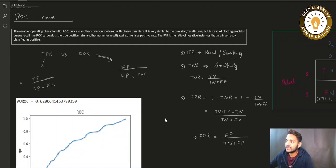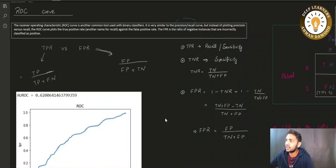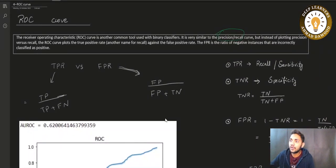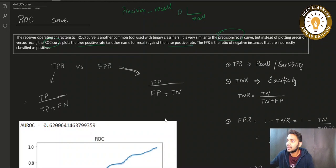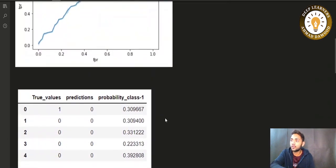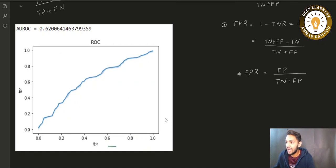It is very similar to the precision-recall curve, but instead of plotting precision vs. recall, the ROC curve plots true positive rate vs. false positive rate. In the last session, on the x-axis we had recall and on the y-axis we had precision. But in the ROC case, on the x-axis we have false positive rate and on the y-axis we have true positive rate.